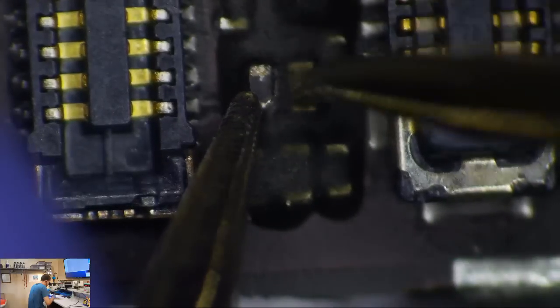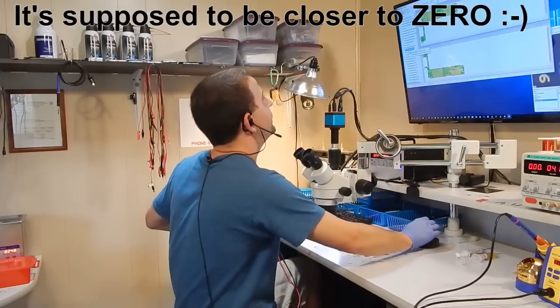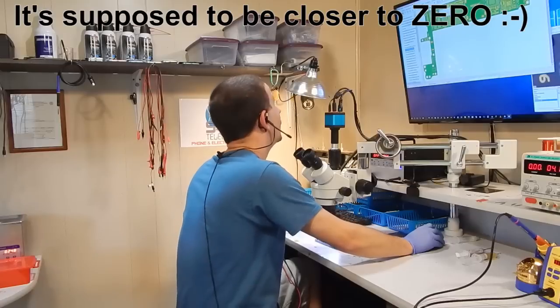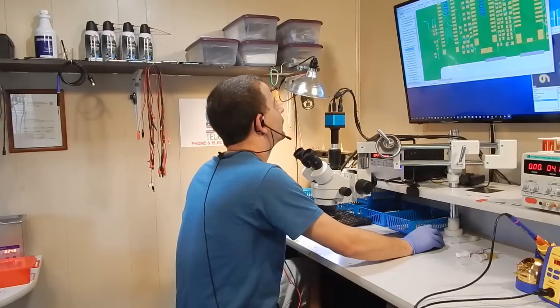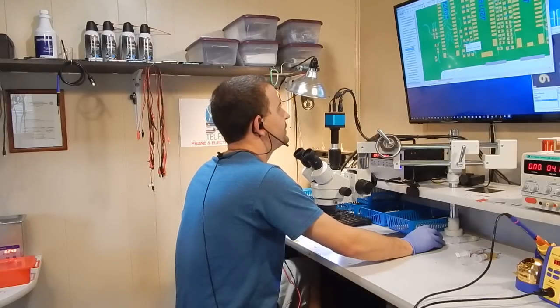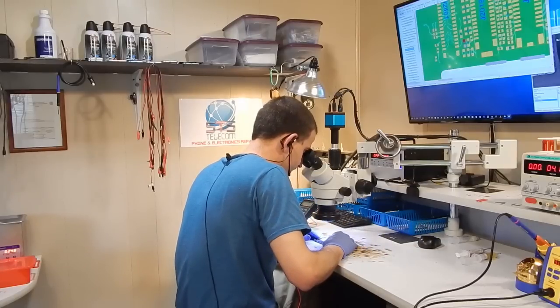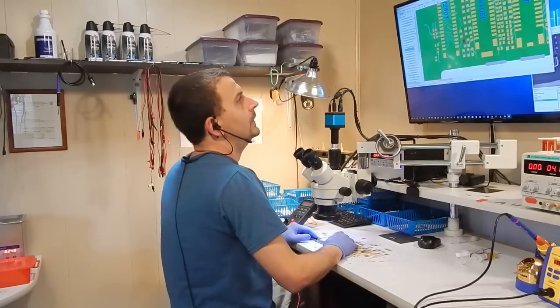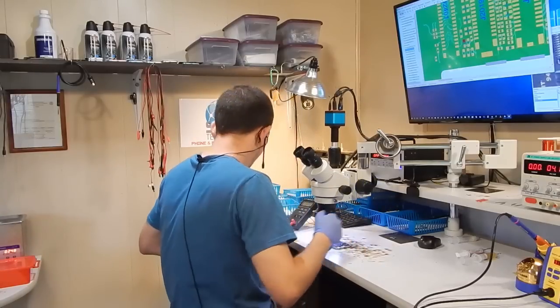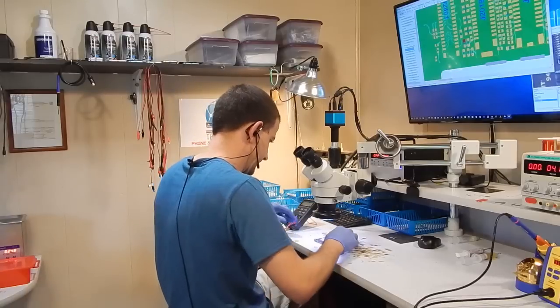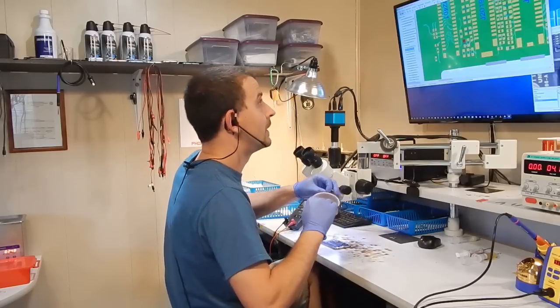Okay now I'm getting 15,000 ohms across that component and it is FL 2027. It is a PP1V8 line for the display so that would absolutely cause issues getting an image on the screen. So let's go ahead, let's go ahead and replace that little dude. I'm gonna anchor the phone down to the table so that I can get some pressure on it without it sliding around on me.